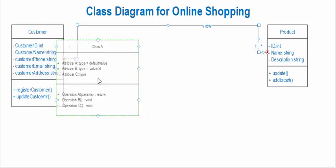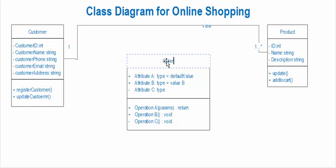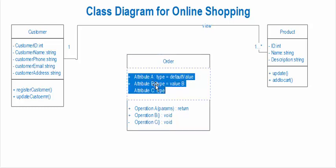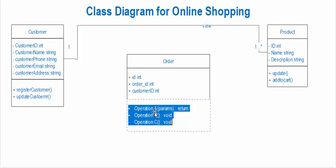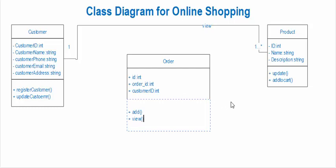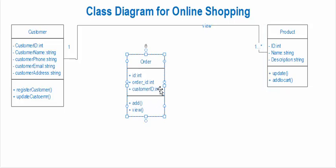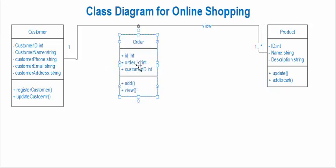Now let's create the order class. Attributes include order ID (a unique integer ID for the order) and customer ID. Functions include add and view. A customer can place an order, so let's make that relationship next.